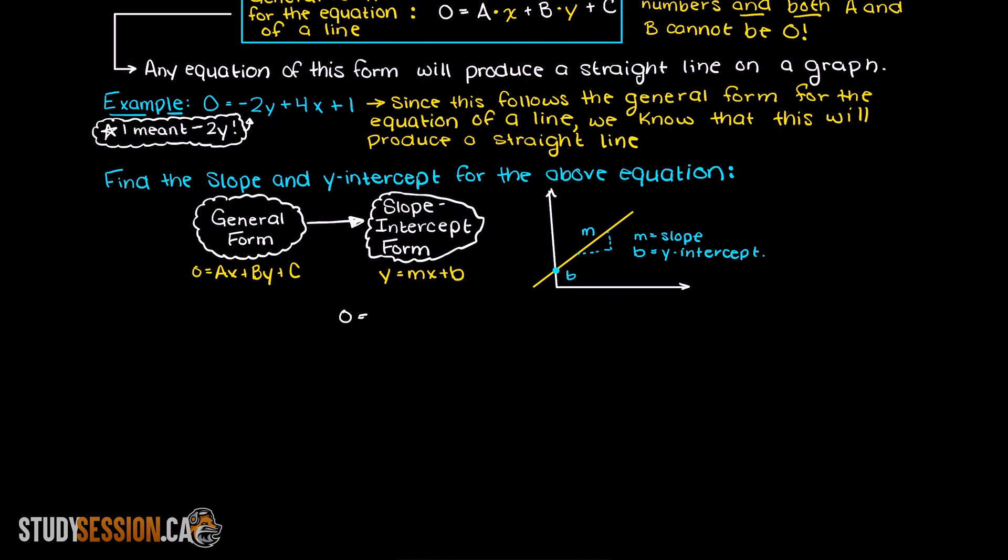Therefore by bringing our 2y to the right side of our equation and dividing by the 2 we get the following equation. Which upon closer inspection allows us to easily find the slope of the line and the y-intercept.